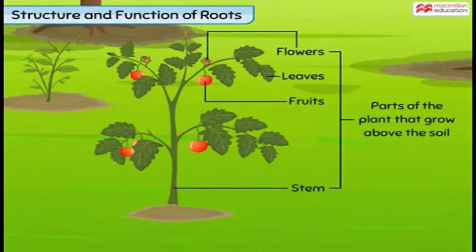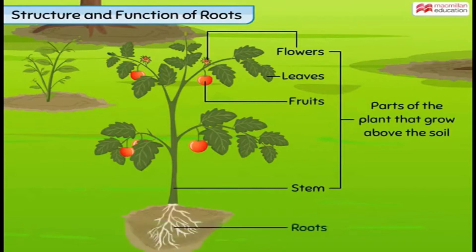When we look at most plants around us, we see the parts of the plants that grow above the soil. Do plants have other parts as well? Plants are able to stand tall and firm because of a part of the plant called the roots, which mostly remain under the ground.